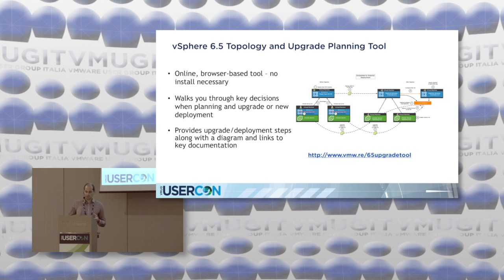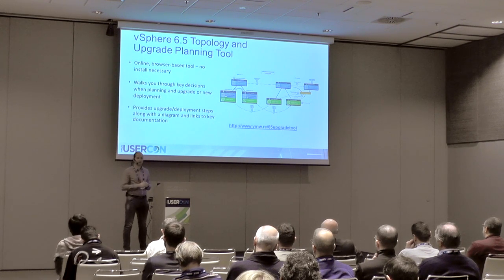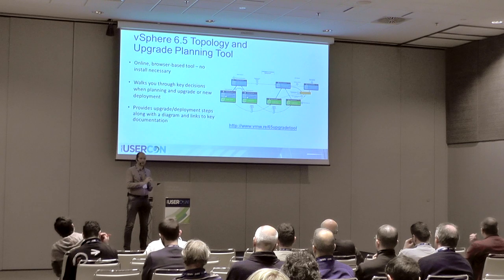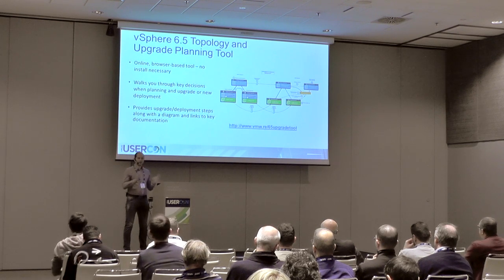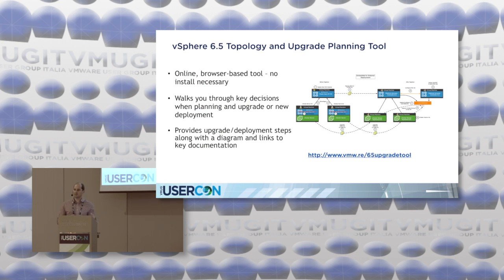One tool I really recommend is the 6.5 Upgrade Tool — it's an online browser-based questionnaire tool. You answer several questions: what is your current topology, what topology you want after the upgrade, whether you want enhanced link mode, and so on. Based on those answers, it builds a plan with the sequence of steps you need to take to upgrade from the previous version of the appliance to the next version.